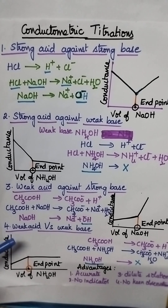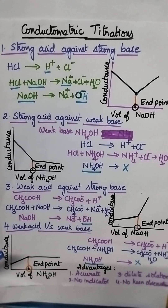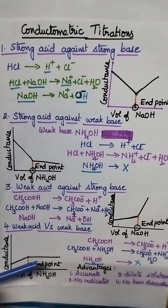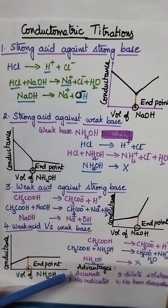And finally, moving to weak acid against weak base — initially the conductance of weak acid is low. On the addition of weak base, slowly the conductance increases. After reaching the end point, there is no change in the conductance.